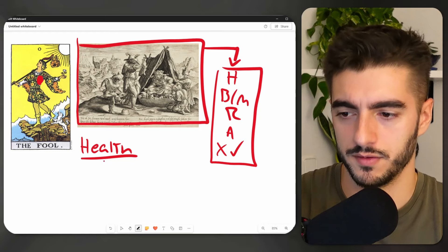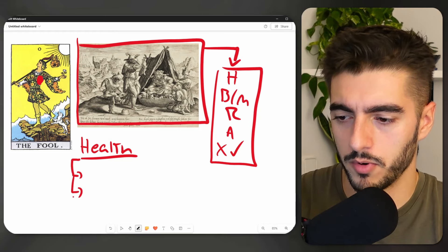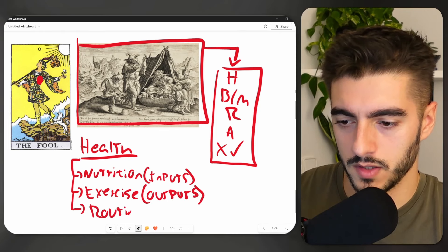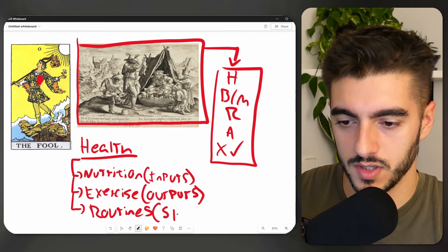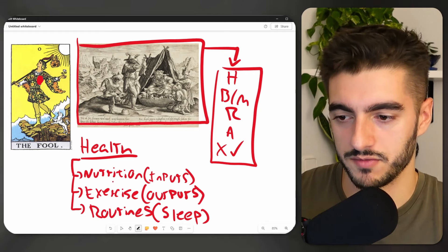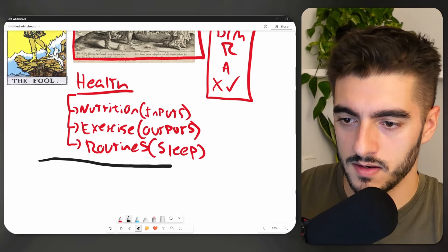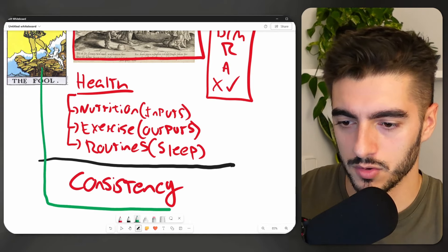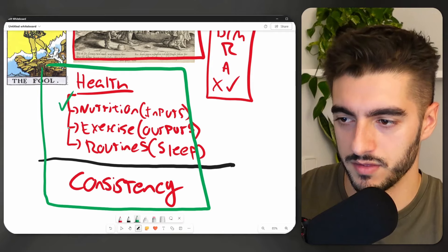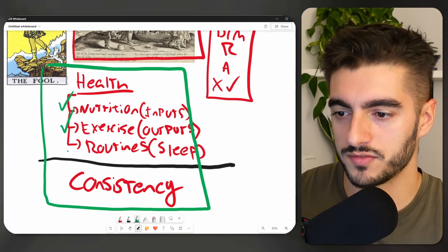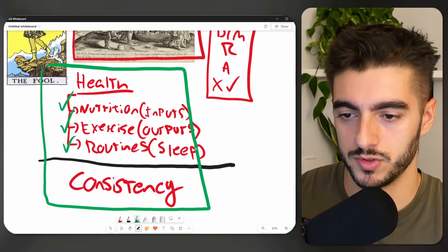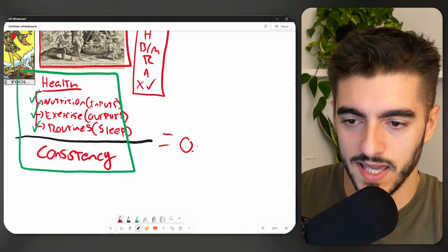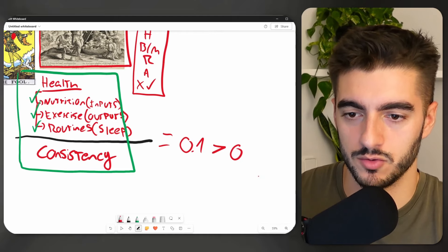Think about health. Everyone knows how to be healthy. There's basically three components to it. You have nutrition, which are your inputs. You have exercise, which are your outputs. And then you have your routines, which are things like sleep and other things that we do on a daily basis. And then the foundation of it all when it comes to health is consistency. Everyone knows that to be healthy, you have to consistently eat healthy food, consistently practice exercise, and consistently keep up a healthy routine.